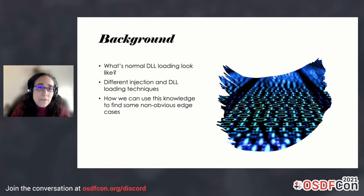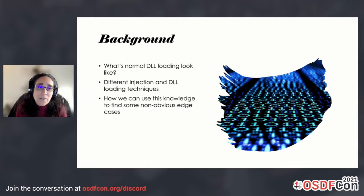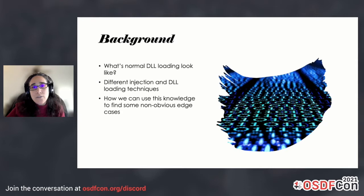A little bit of background. First of all, how do we know what is normal on a system in order to find some malicious code? We're going to look at normal DLL loading and what that looks like, then look at different injection techniques, and then use that knowledge to find some edge cases that don't really fit one of these categories.